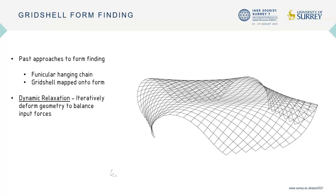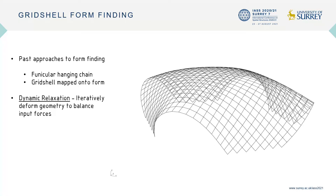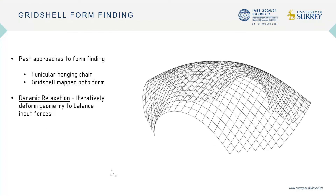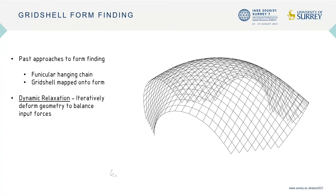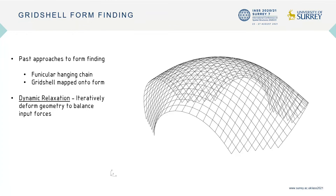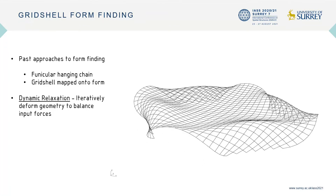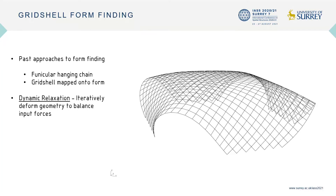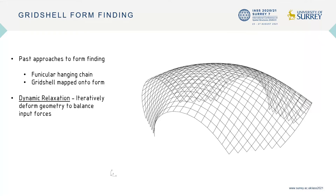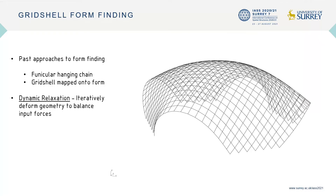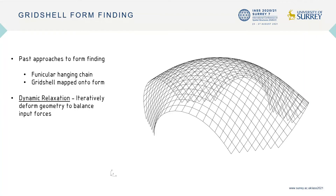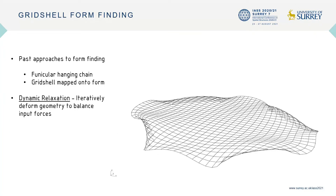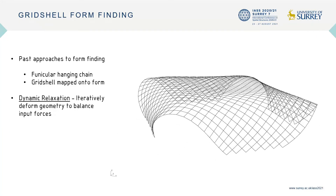Some of the past approaches to form-finding were to use a hanging chain model, such as in the famous Mannheim grid shell, or to map a grid onto a three-dimensional form, such as in the Downland grid shell. Today, computational dynamic relaxation solvers can be used in form-finding to simulate the behavior of bending structures.